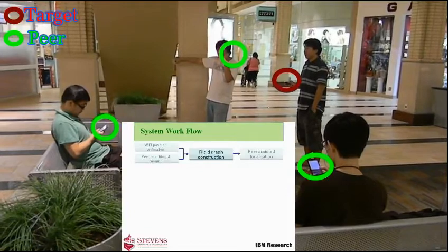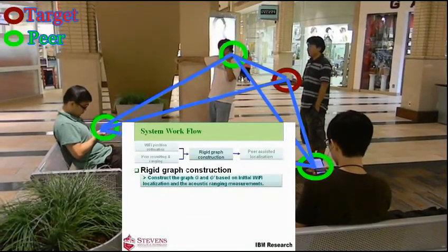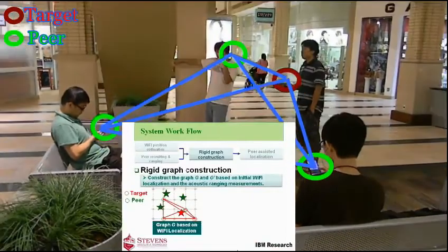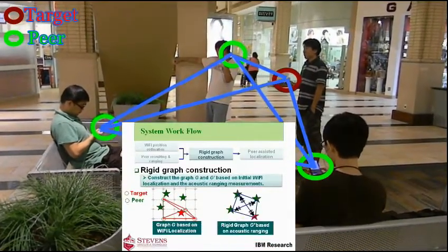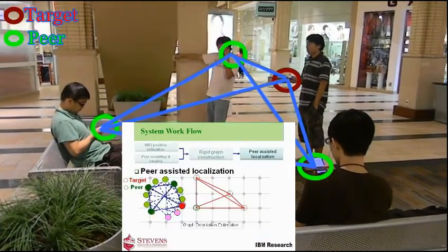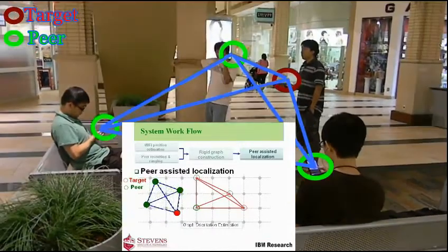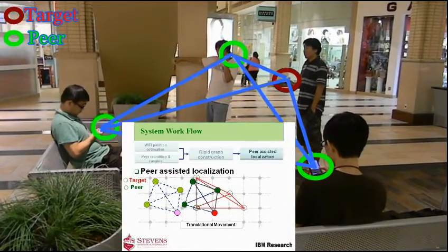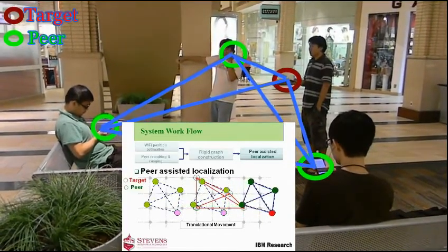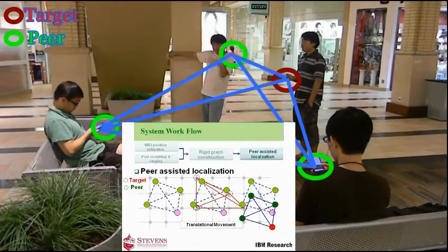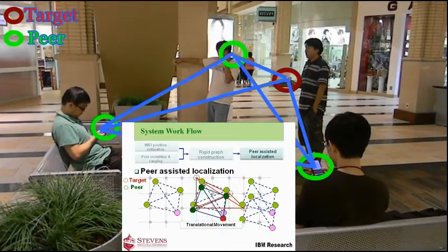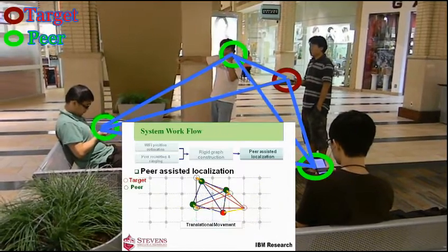Then we construct two graphs: one from Wi-Fi initial position estimation, and the other is the rigid graph from acoustic ranging with accurate relative distances among phones. We further search for the optimal location and orientation combination to superimpose the rigid graph against the fingerprint map through translational movements, both horizontally and vertically, until the graph is placed at the position with the best fit to the measured Wi-Fi.